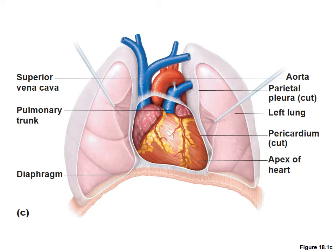This is showing you a cartoon version of what everything looks like. The heart is directly above the diaphragm. The heart has three major vessels that we can see here feeding into and out of it. We have the superior vena cava — the fourth vessel would be the inferior vena cava. The superior vena cava pulls blood down from the top of your body and from your arms down towards your heart to drain the blood back to the heart.